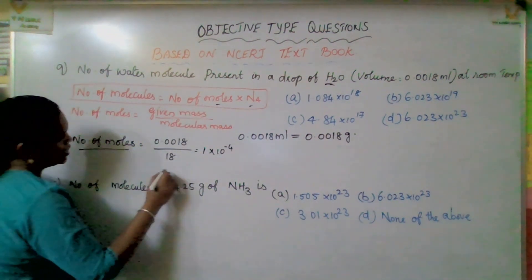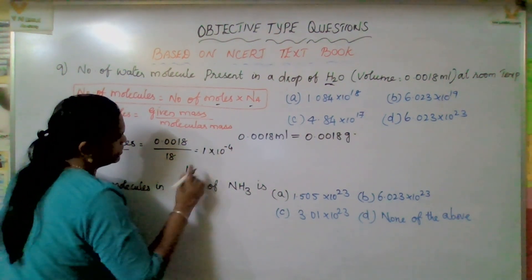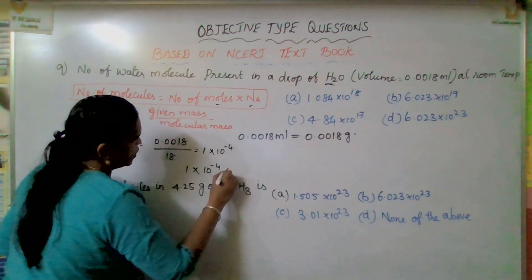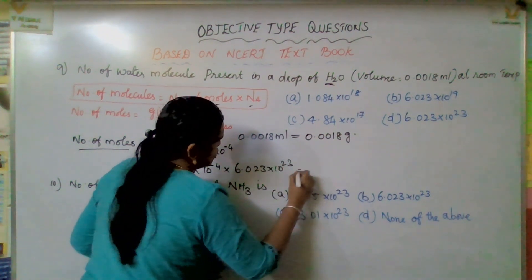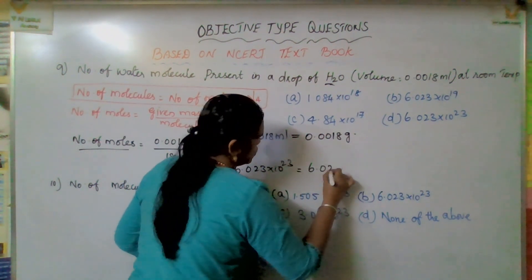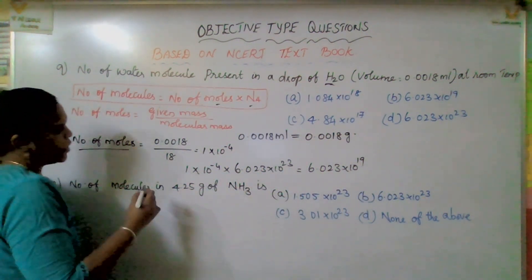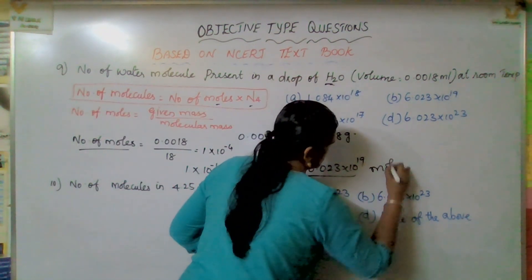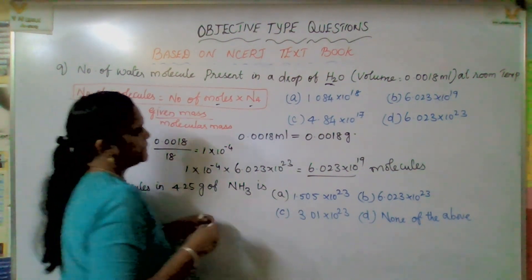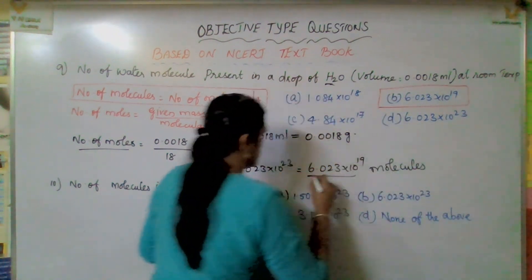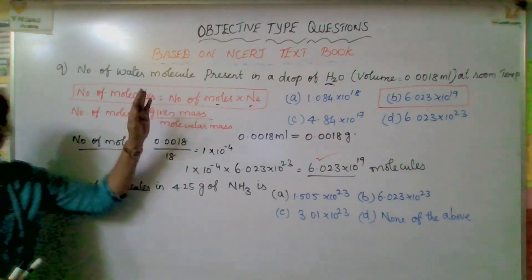Number of molecules equals number of moles into Avogadro's number — 1 into 10 to the power of minus 4 into 6.023 into 10 to the power of 23, which gives 6.023 into 10 to the power of 19 molecules. Option B is correct. I hope you got a clear idea to find out mole-related concepts.